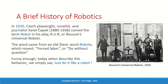Moving forward to 1920, the Czech playwright Karel Čapek wrote his popular play Rossum's Universal Robots. It was he who introduced the word robot to our lexicon. The word robot comes from the Czech or Slavic word 'robota,' which means forced labor, or do without question, or just follow orders. He used that to describe a machine that does exactly that — does the job without questioning. It's funny because today when we say someone does the job without questions, we say 'do it like a robot' — yet the word robot itself means do it without questions.